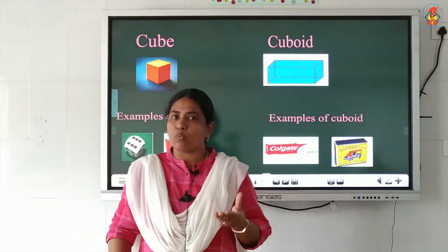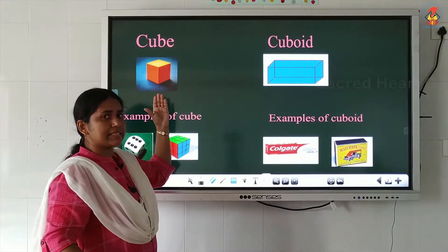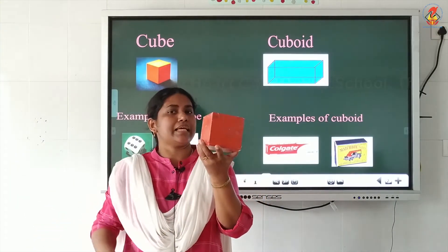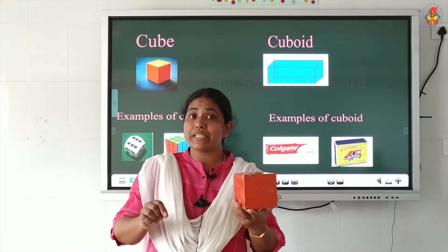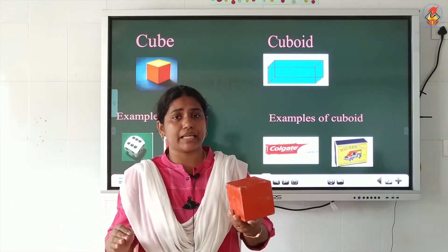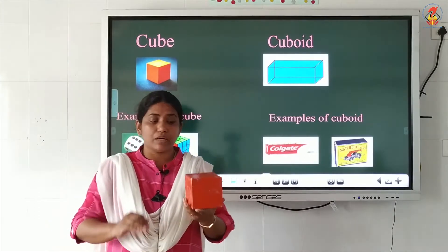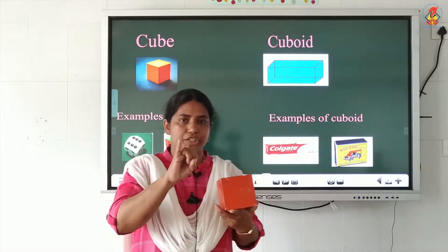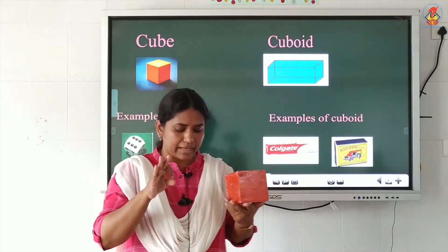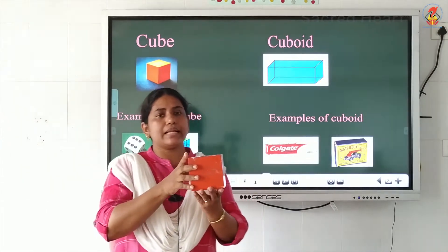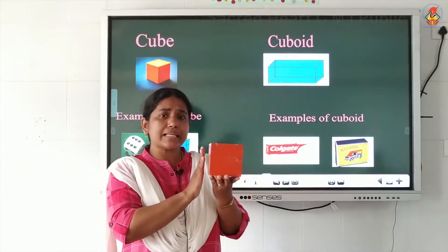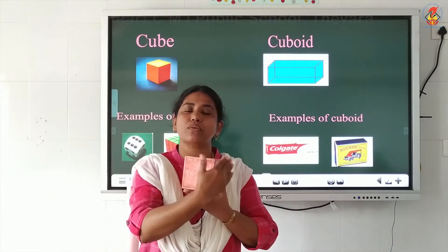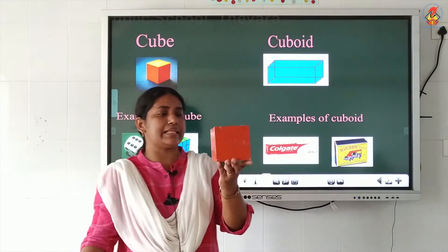Now we have to discuss one by one. The first 3D shape we study is cube. For 2D shapes, each and every two-dimensional shape has sides and corners. But for these 3D shapes, not only sides and corners — we have to study three things: edges, faces, and corners. So we have to study the faces, edges, and corners. Let's check — what is a face? Face is the plain surface of a solid.